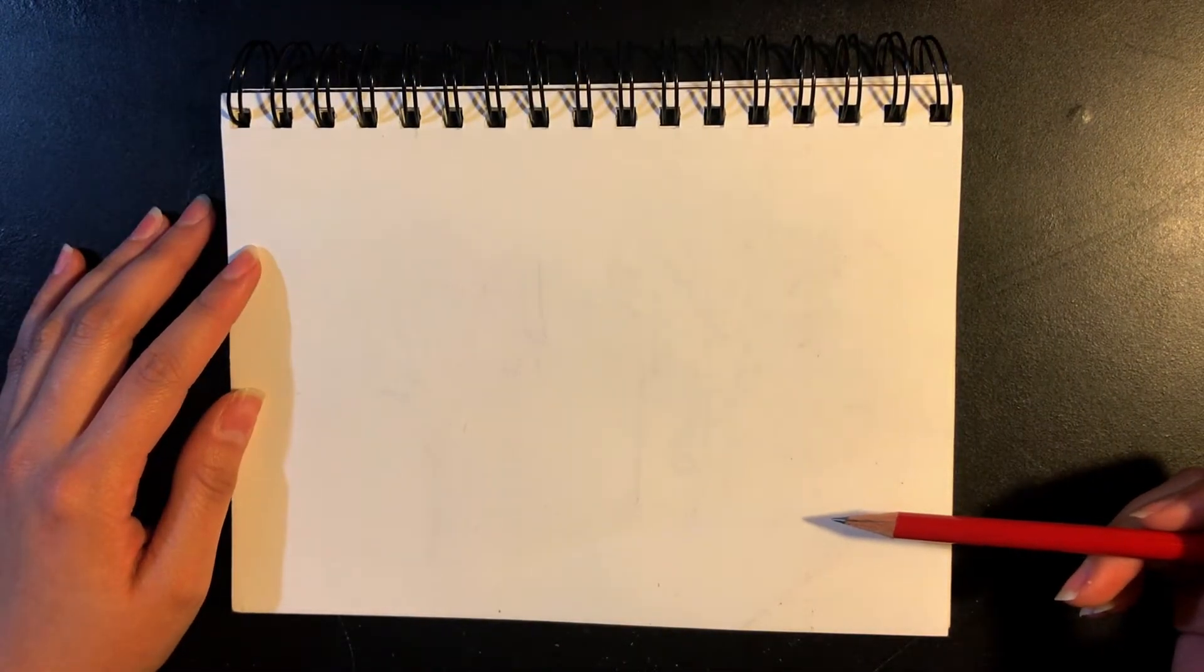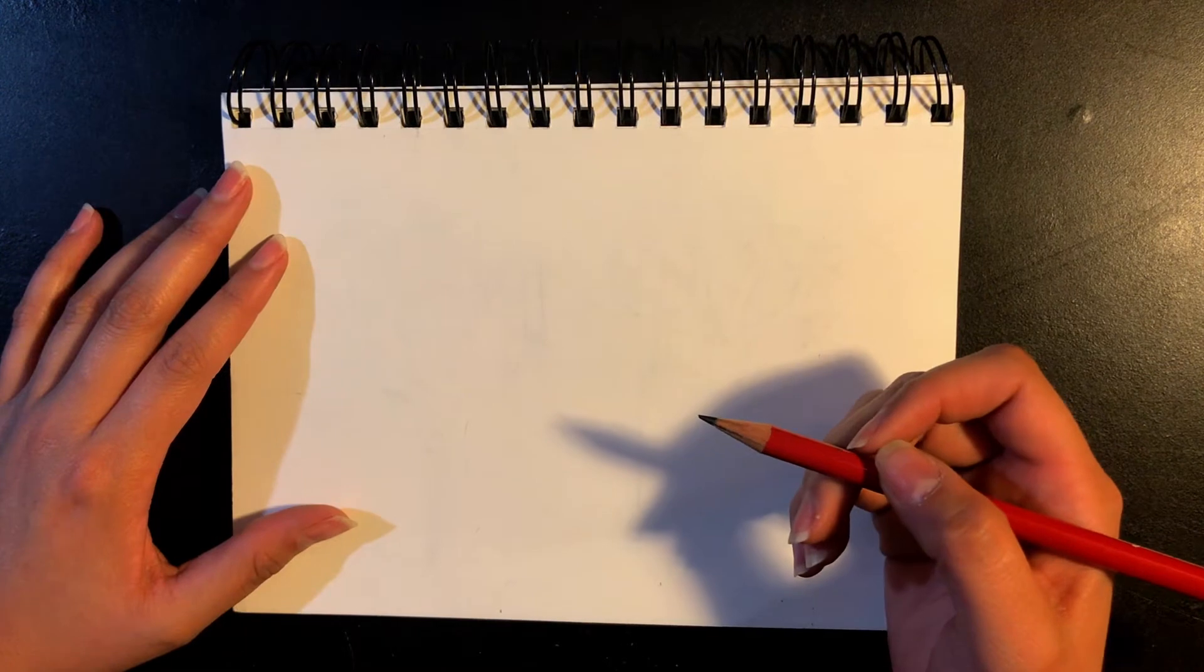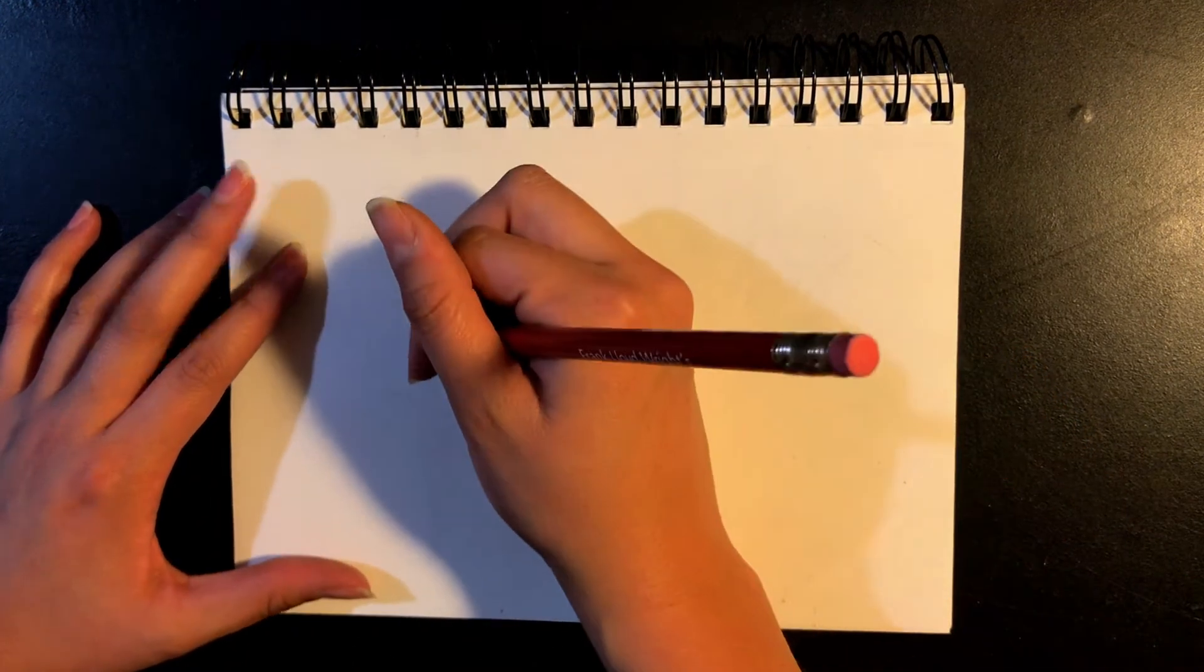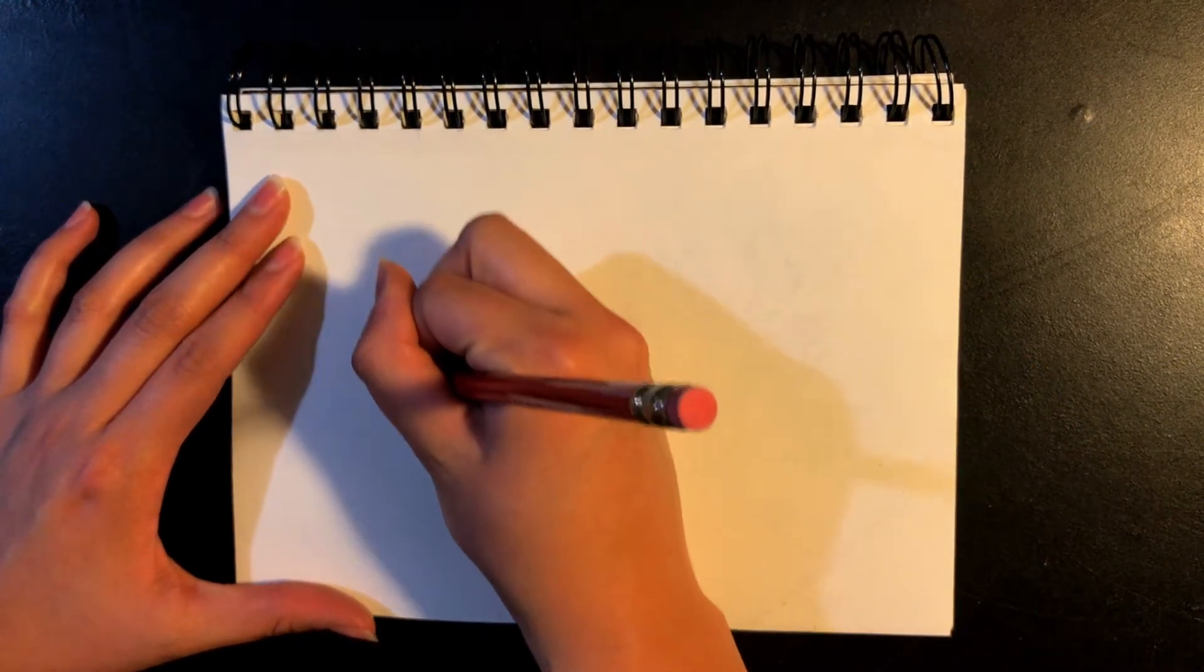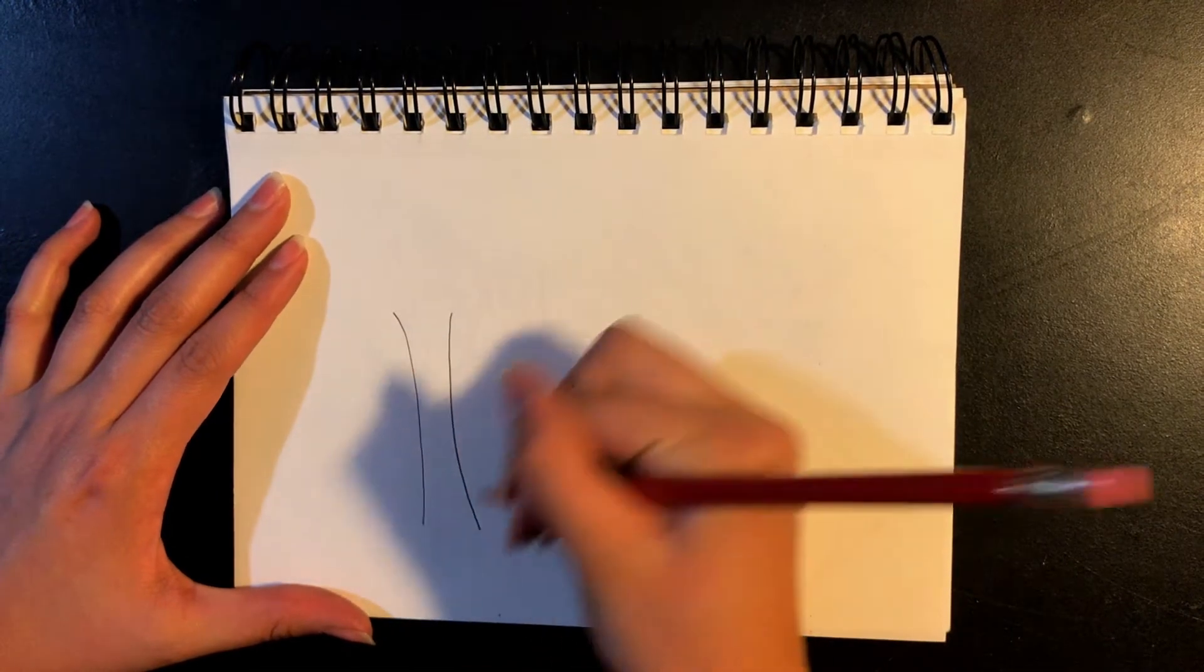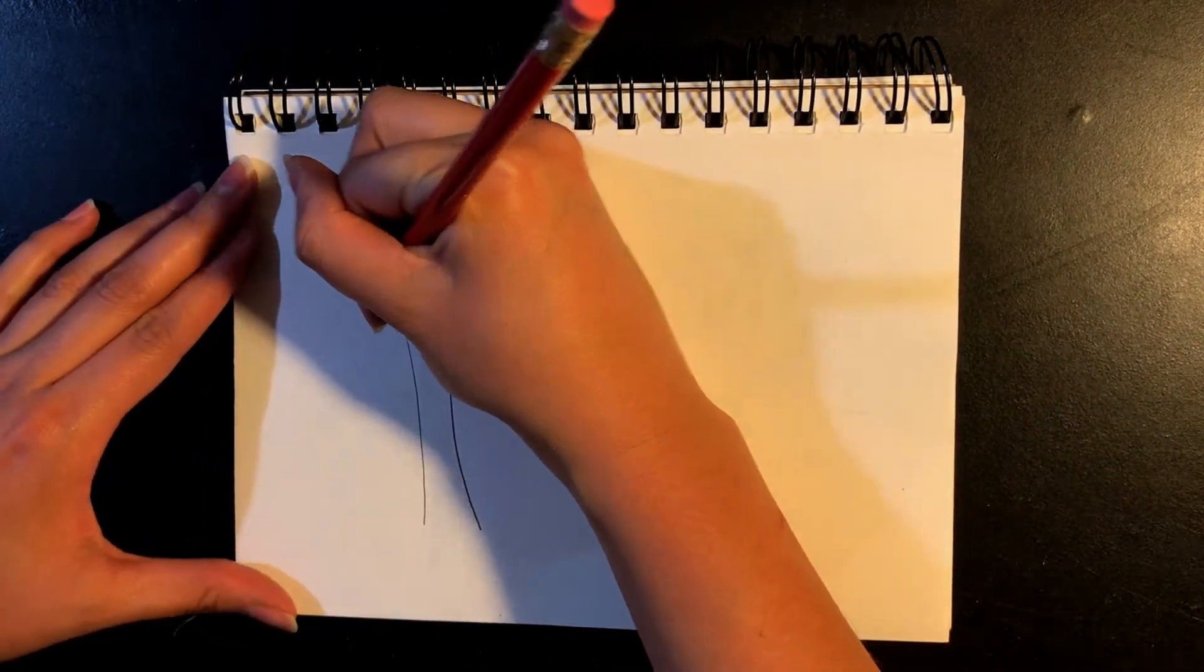Our foreground is closest to the viewer, so it's going to have the most detail. So first, I'm going to draw a tree. In the desert, there are Joshua trees, so this is going to be my Joshua tree.